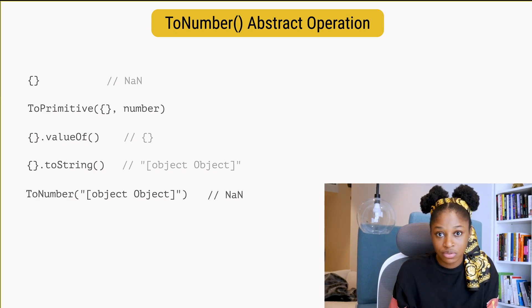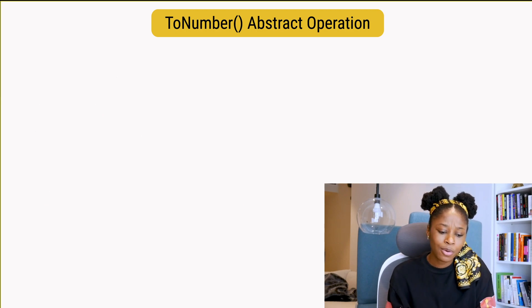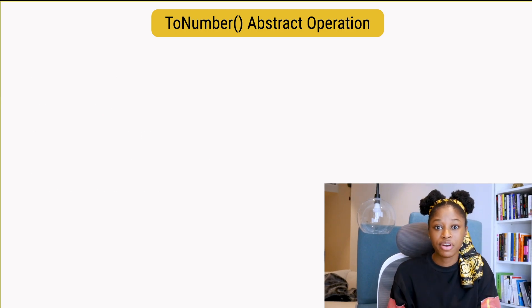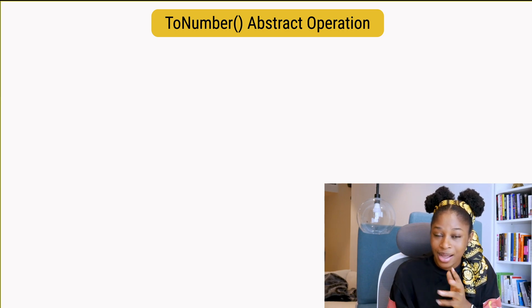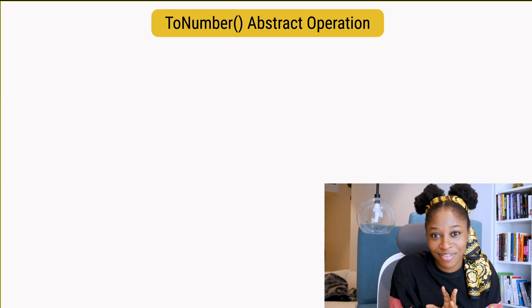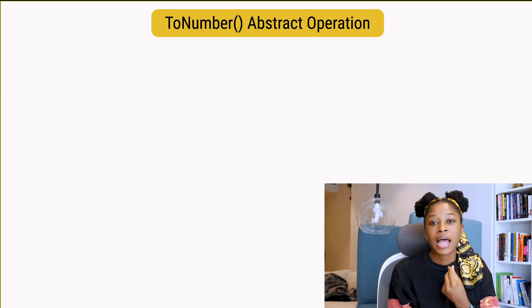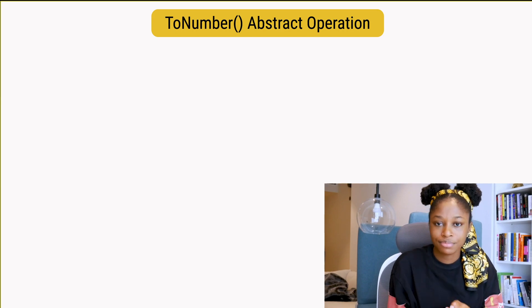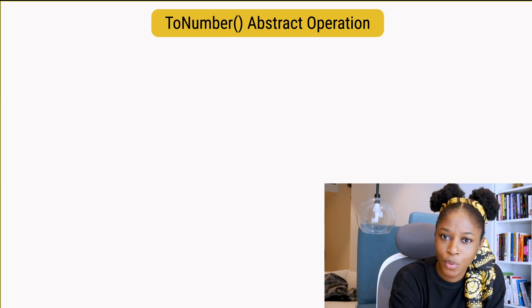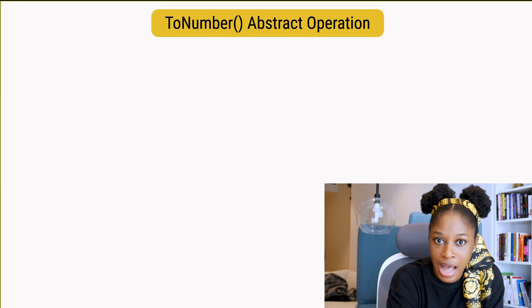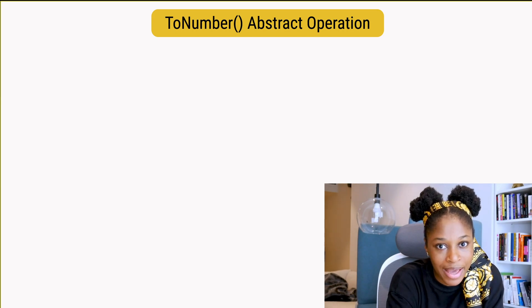And we have come to the end of this video. I hope you understand how the ToNumber abstract operation converts different value data types to numbers. I also hope to see you in my next video where I will be explaining the ToBoolean abstract operation. Bye.